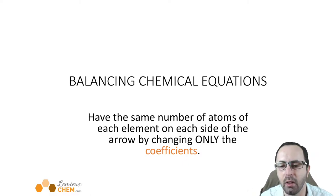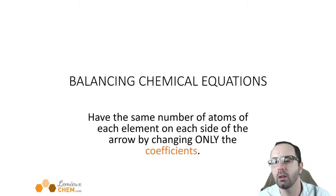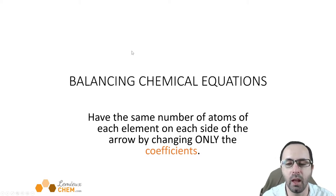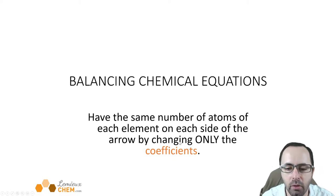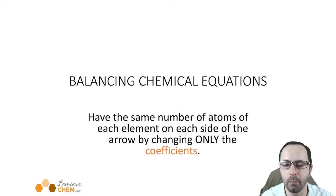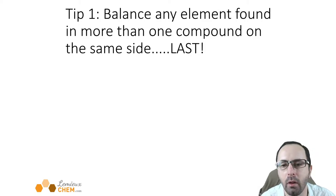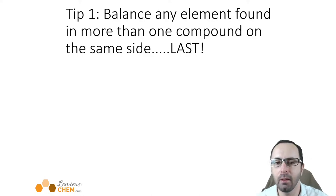In a chemical reaction, atoms are not lost or gained — they're just rearranged and bond to each other in a different way. I'm going to give you a few tips on how you can do this. Determining these coefficients is a trial and error kind of guessing process, but if you use the tips I show you, you can get to the answer more quickly without random guesses. The first tip for balancing chemical equations: any element found in more than one compound on the same side, do that last. These will be the hardest to balance, and oftentimes if you leave them for the end, they will work themselves out.